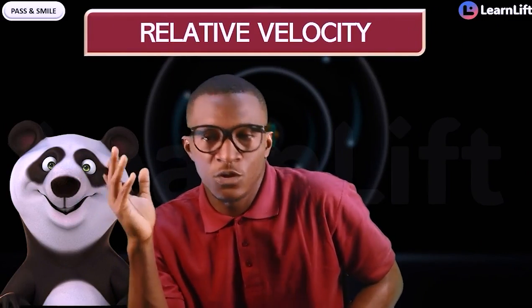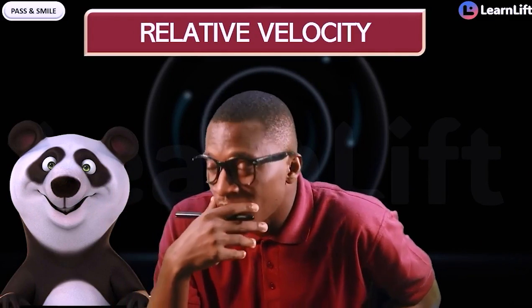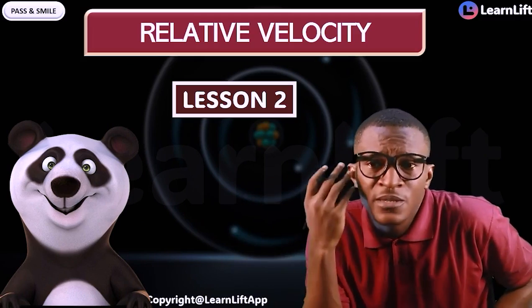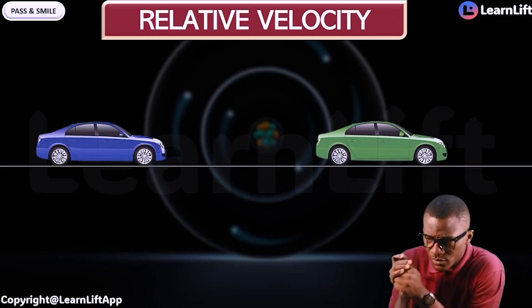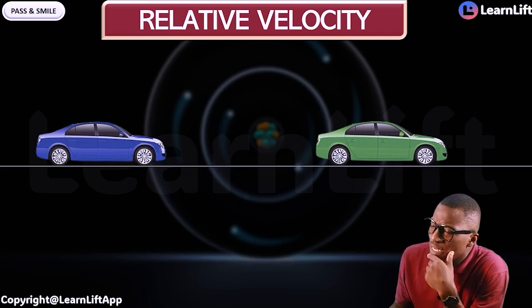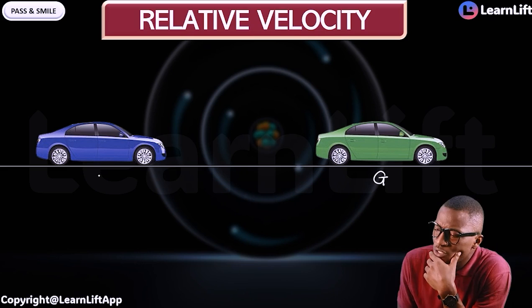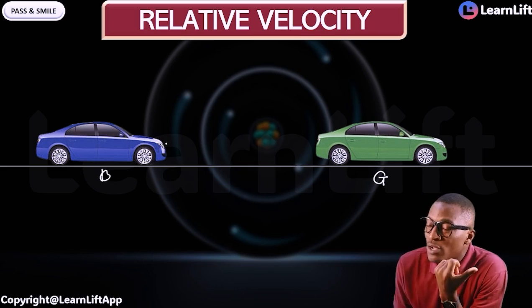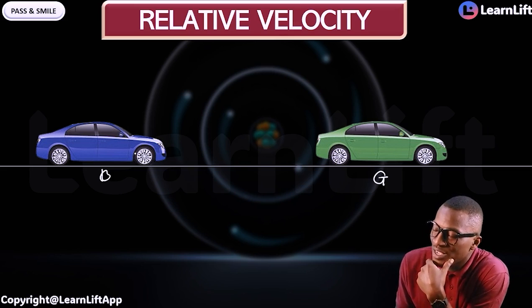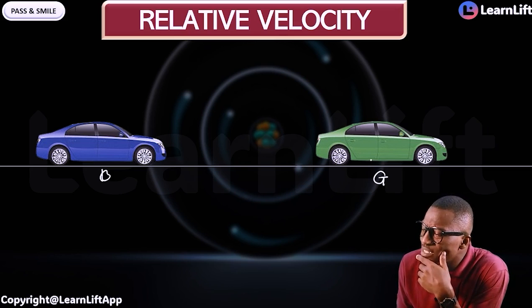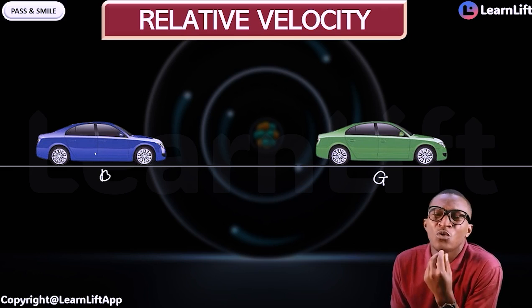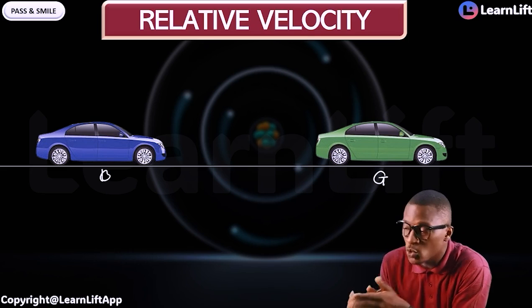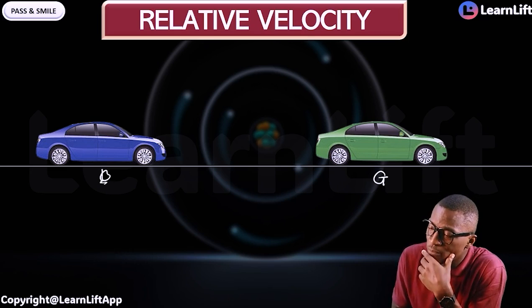Hello guys, in this class let's talk about relative velocities. This will be our last lesson since we have introduced scalars and vectors. Now, what is relative velocity? It's a simple concept. Let's say we have two cars — a green car and a blue car. The green car is ahead of the blue car. The word 'relative' is about comparing the same quantities in motion together. When you compare the speed of the green car with respect to the blue car, that is what we call relative velocity.